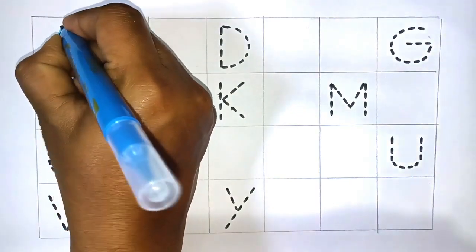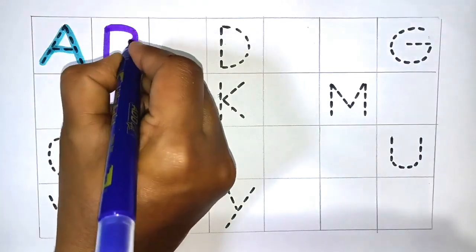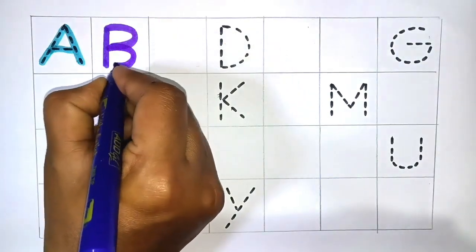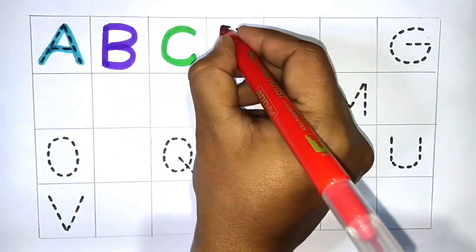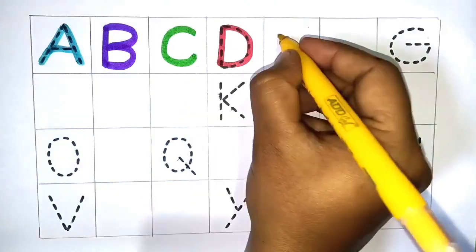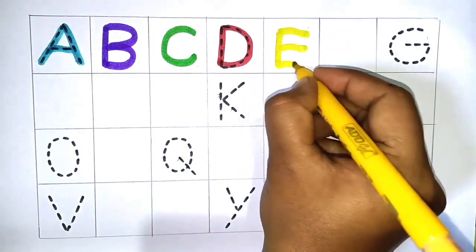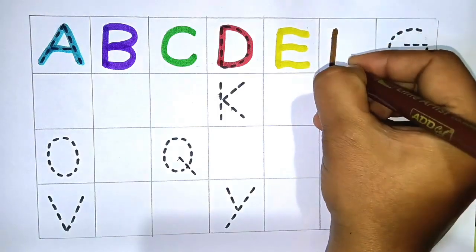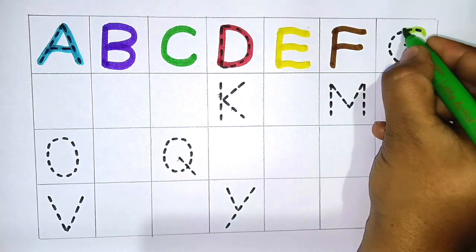A for apple, B for ball, C for cat, D for dog, E for elephant, F for fingers, G for green.